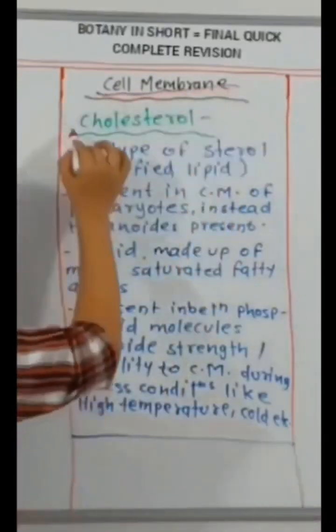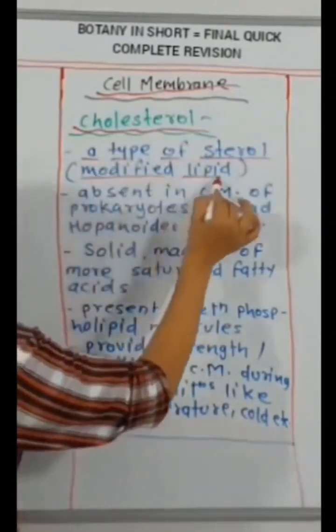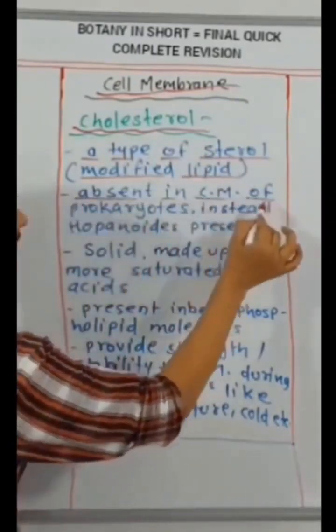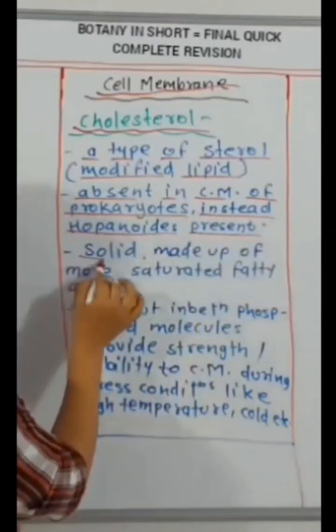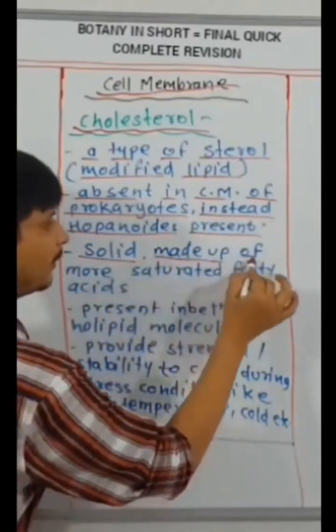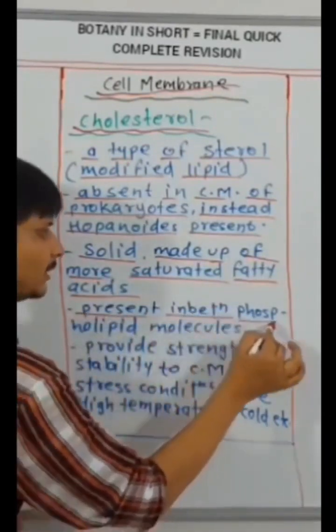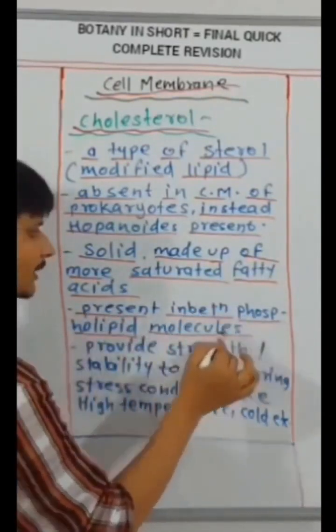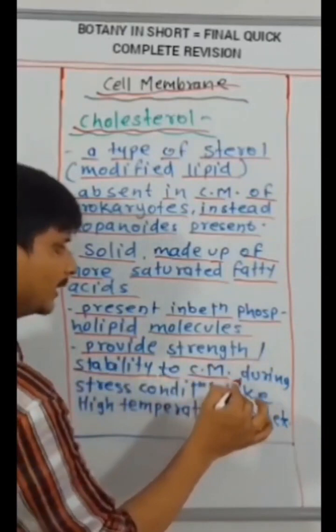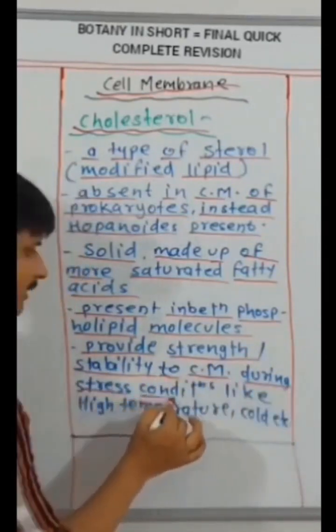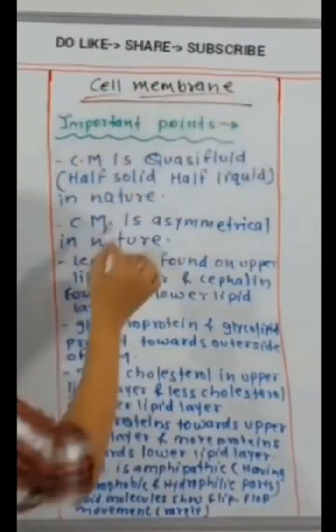Cholesterol, a type of sterol modified lipid. Absent in cell membrane of prokaryotes. Instead, hopanoids present. Solid made up of more saturated fatty acids. Present in between phospholipid molecules. Provide strength or stability to cell membrane during stress conditions like high temperature, cold, etc.